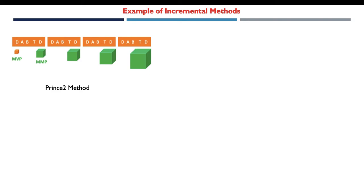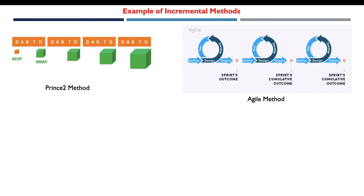As an example of incremental methods, we have the PRINCE2 method. PRINCE2 is an incremental project management method. It includes a stage of incremental delivery for smaller parts of the product. All the activities of a given stage are performed, and the final product is generated by composing the previous deliverables or increments.